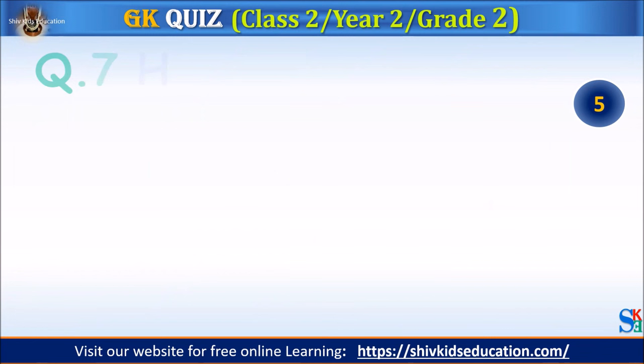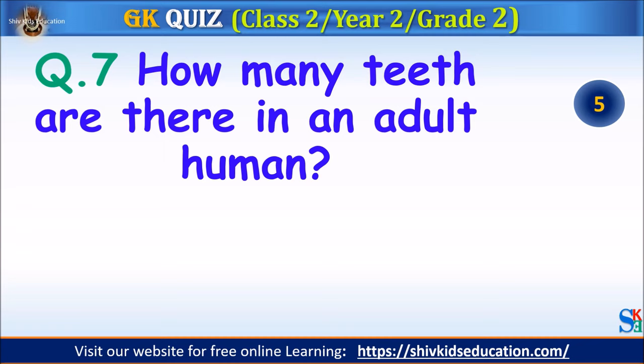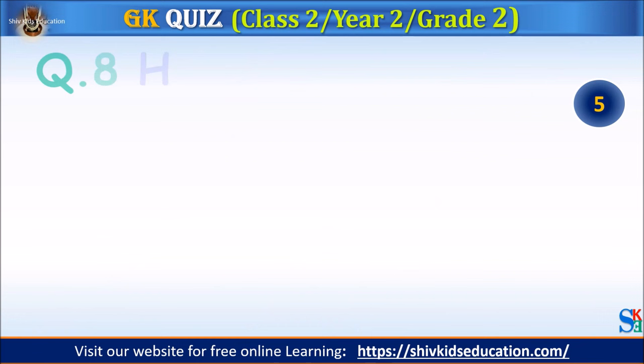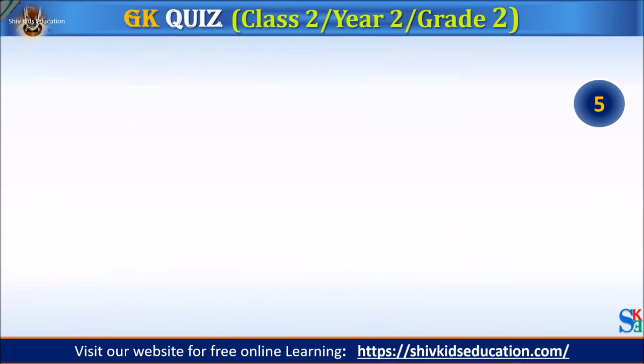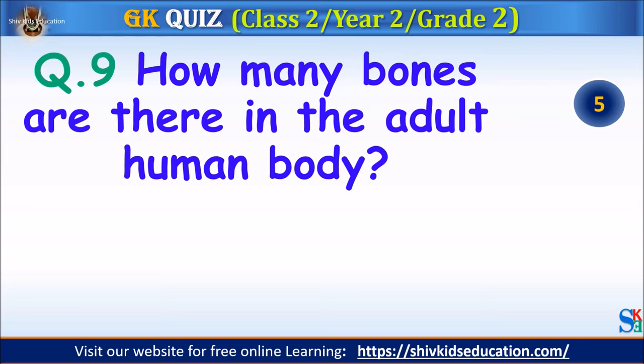Question 7: How many teeth are there in an adult human? Your time starts. The answer is 32. Question 8: How many hours are there in two days? Your time starts. The answer is 48 hours. Question 9: How many bones are there in the adult human body? Your time starts. The answer is 206.